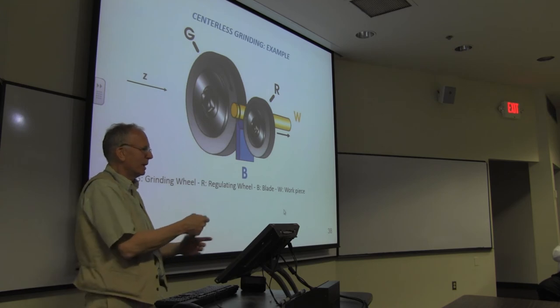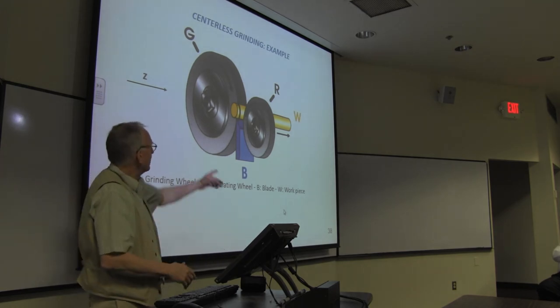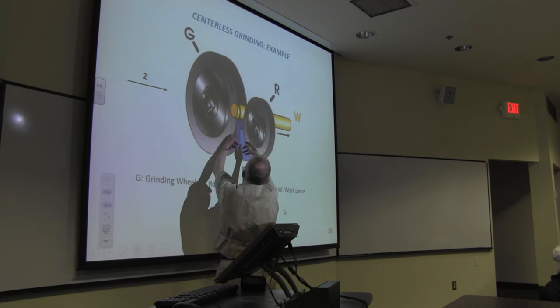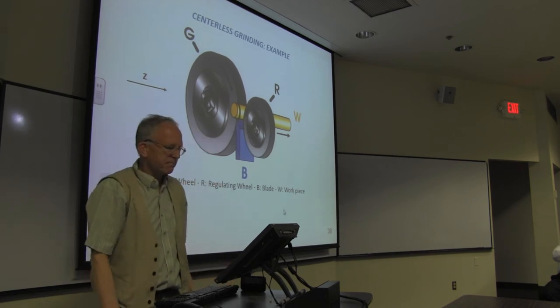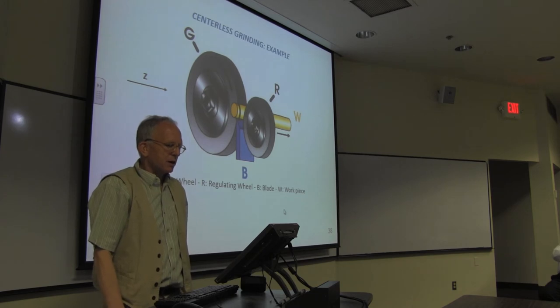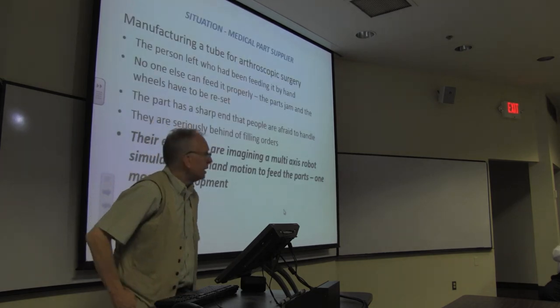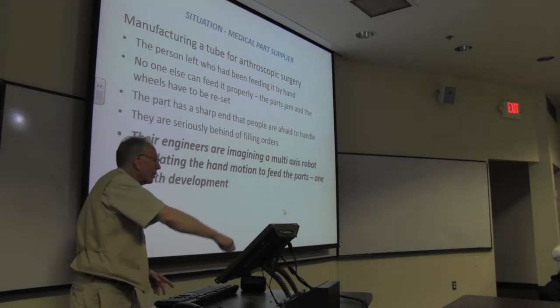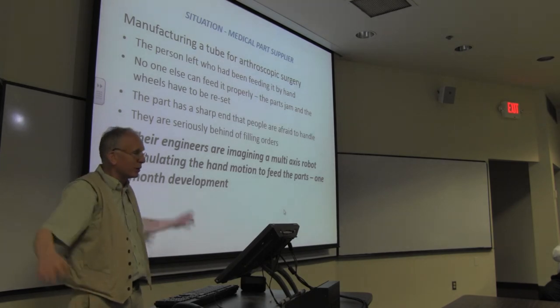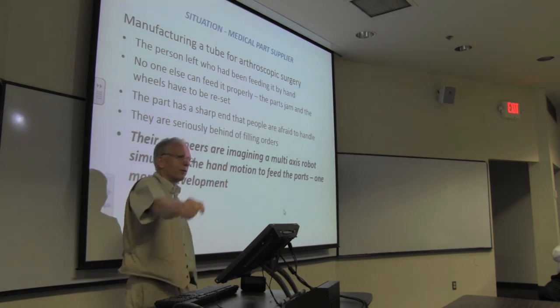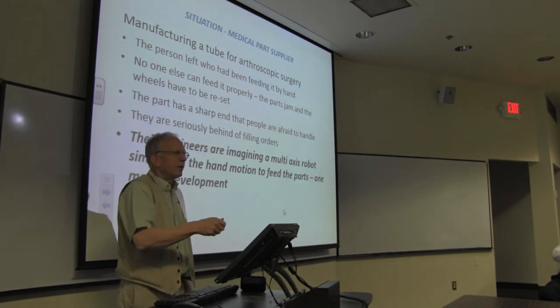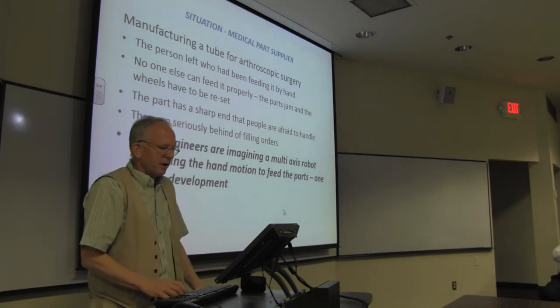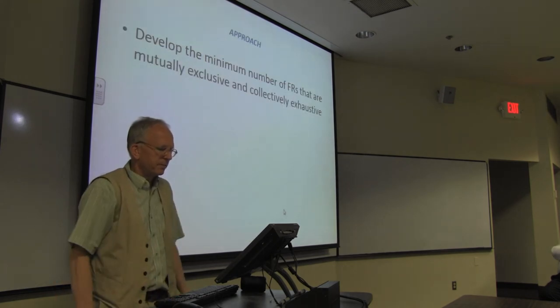They had somebody who was loading this, and this person was doing a very good job. Then he or she ended up leaving to go to medical school. The next person in was afraid of the sharp end and afraid of the spinning wheels and was kind of like dropping the stuff in. If this thing gets a little bit crooked, it jams up and you've got to readjust it. These wheels need to be adjusted just right so it sort of pulls the piece through. When it's all the right diameter, it falls down. They were way behind in their orders. When I was there, they said, 'We're looking at robots and we need to design like a robotic arm.' They wanted like a robot there grabbing the part, putting it in, looking like a human being.